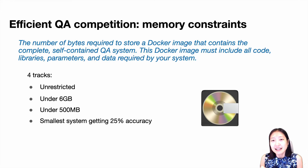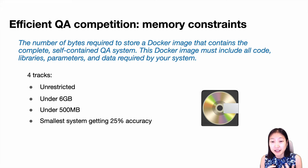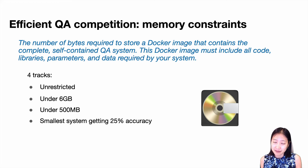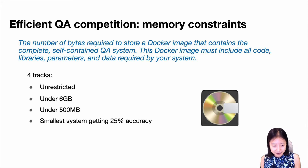In this competition, we focused on memory constraints, defined as the number of bytes required to store a Docker image containing the complete self-contained QA system. This Docker image must include all code, libraries, parameters, and data required by the system. We had four separate tracks: unrestricted, under six gigabytes, under 500 megabytes, and a special track for the smallest system achieving 25% accuracy.